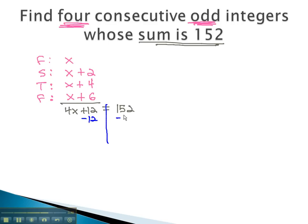Subtracting 12 from both sides of the equation will give us 4x equals 140. Finally, to get the x alone, we divide both sides by 4. We find x is equal to 35.